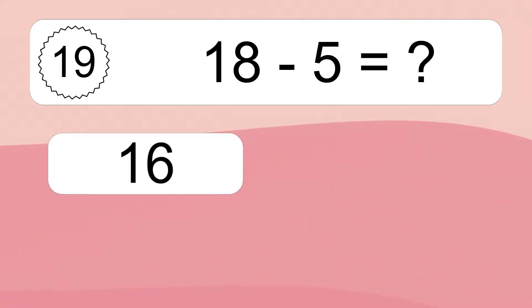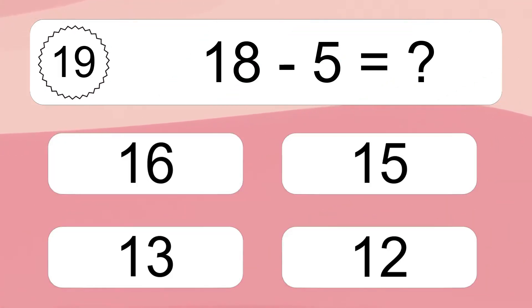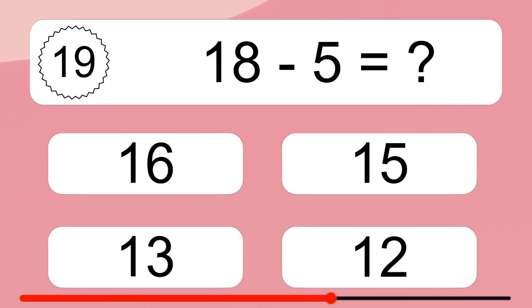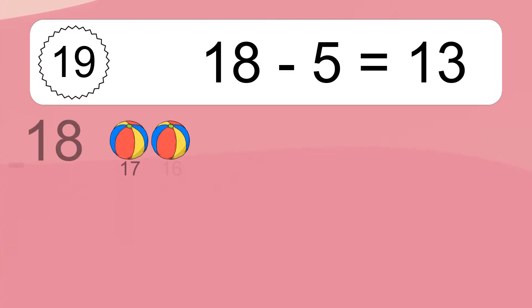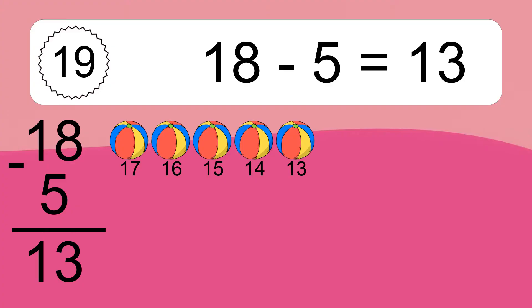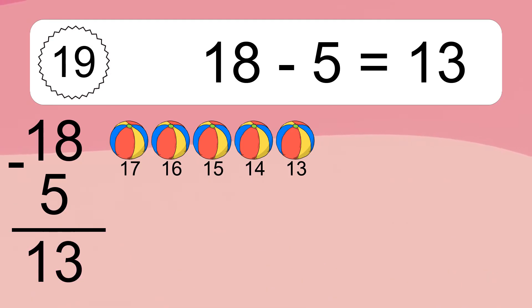18 minus 5 equals what? 18 minus 5 equals 13. Let's count it! 17, 16, 15, 14, 13.